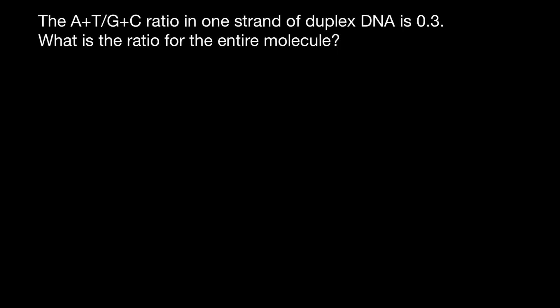Hello, and welcome to Nikolai's genetics lessons. Here's the problem: the ratio of bases adenine and thymine to guanine and cytosine on one strand of the double-stranded DNA is 0.3. What is the ratio for the entire molecule?